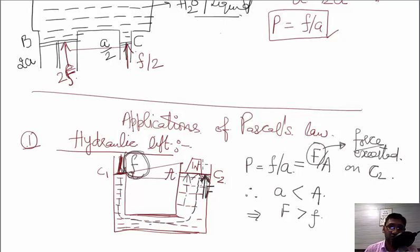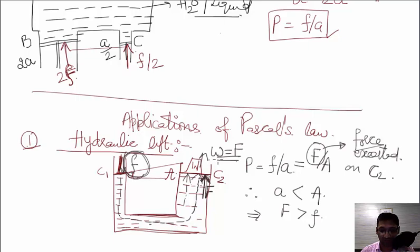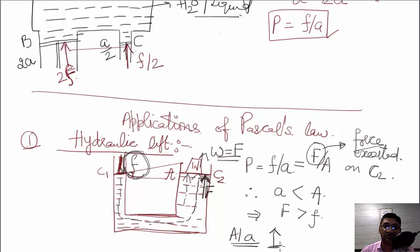Capital F represents the force on C2. Since we assumed small a is less than capital A, from the equation it follows that small f must be less than capital F. In other words, capital F will be greater than small f. So we apply small force f on C1, but we get a larger force capital F on C2 — enough to lift a heavy weight. As we increase the ratio A/a, the force F will also increase, meaning we can lift heavy loads like cars and trucks by applying a small force.